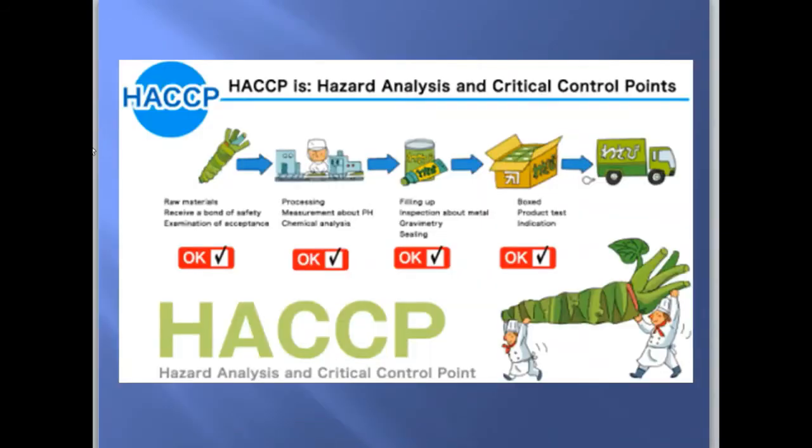In HACCP — Hazard Analysis Critical Control Points — we are trying to find out what hazards are present in a food industry and how we can control them, and what are the control points at which they can be removed. But before going into the control points, we need to know what the hazards are and what measures we can use to prevent them.